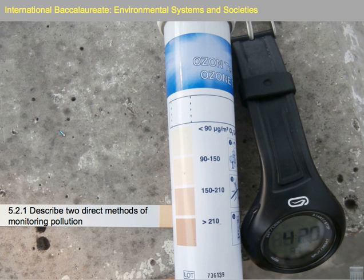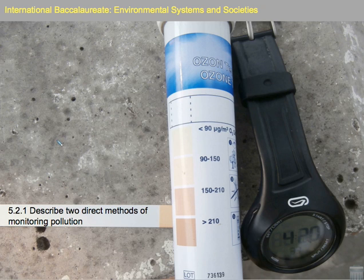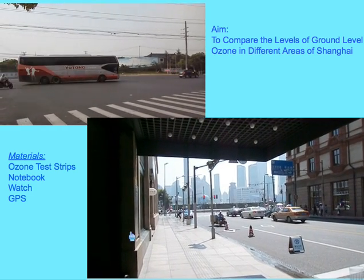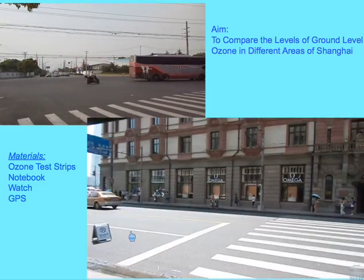Welcome again. Today we examine topic 5.2.1: Describe two direct methods of monitoring pollution. In this lesson we focus on just one of these methods, dealing specifically with air pollution and the monitoring of a key component of photochemical smog — that component is ground level ozone. The aim is to compare the levels of ground level ozone in different areas of Shanghai.